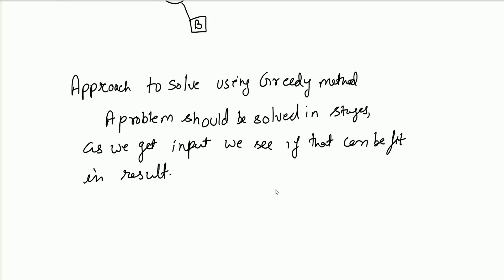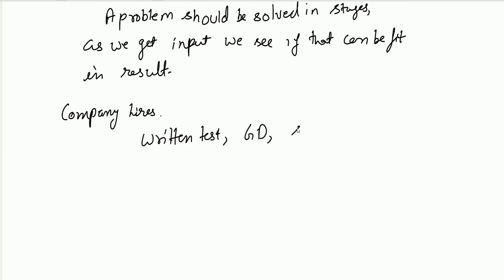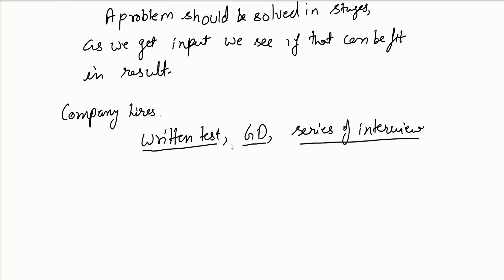We can take the example of how a company hires candidates: written test, then group discussion, then a series of technical and HR interviews, selecting the best candidate. In a greedy approach, the company conducts a written test first, selects some and rejects some, then conducts GD and rejects more, and then interviews — selecting the best candidate at each stage. This is a greedy approach: rejecting candidates at every stage if they do not clear the cutoff.